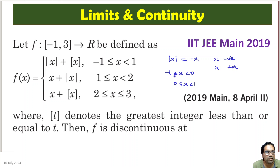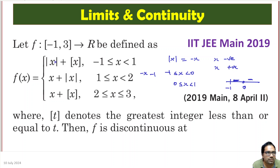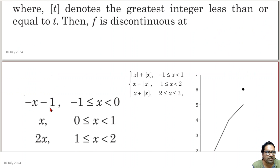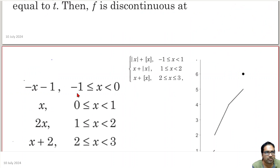When x is negative, the absolute value of x becomes minus x. And the greatest integer function of x, between 0 and minus 1, anywhere in between, the greatest integer function of x is minus 1. So this becomes minus x plus (minus 1), that is minus x minus 1. When x is positive, absolute value of x becomes x, and the greatest integer function of x between 0 and 1 is 0. So that is x plus 0, which equals x. We have broken this into two parts: minus x minus 1 for minus 1 ≤ x < 0, and x for 0 ≤ x < 1.